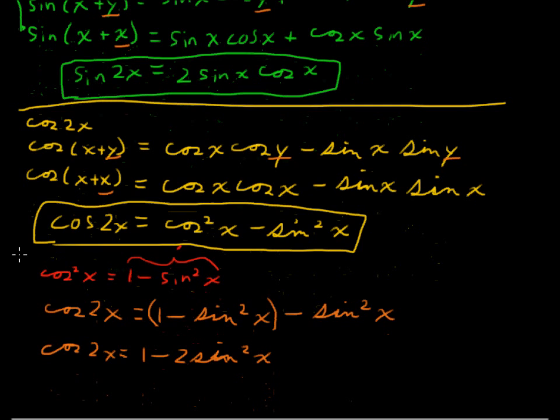So that is another identity, the double angle identity with cos of 2x. You could also go the other way and recognize that cos, or you could put it in terms of sin. You could say sin squared of x equals 1 minus cos squared of x.